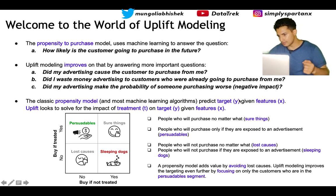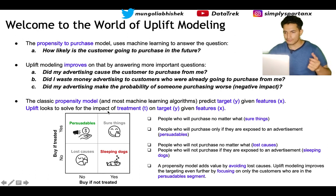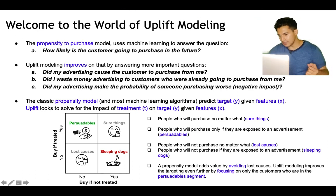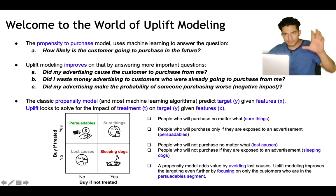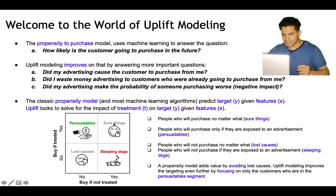The classic propensity model predicts target Y given features X, while uplift looks to solve for the impact of treatment on target Y given features X — that is, whether the treatment has an impact on Y or not. Customers can be segregated into four sections.